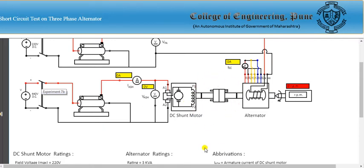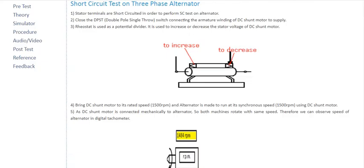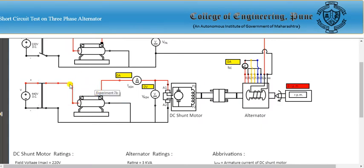Supply is provided to the DC shunt motor by clicking the switch, and the voltage and current values are increased accordingly. The rheostat is used as a potential divider to increase or decrease the stator voltage of the DC shunt motor. Using the rheostat, we increase the speed — the readings keep changing and we increase until the rated speed of the alternator is reached.